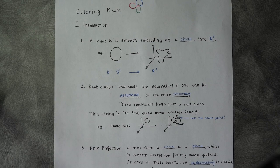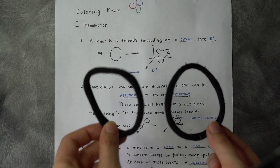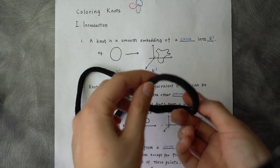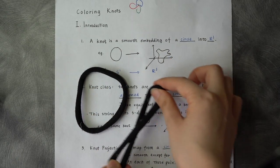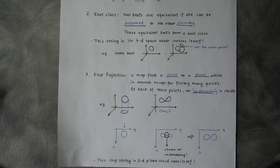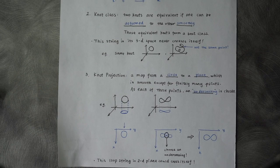We define two knots are equivalent if one can be deformed to the other smoothly. That is saying, if we have those two knots, they are equivalent. And if I twist it and pull it longer, then those two knots are still equivalent to each other. It is really hard to study a 3D object.